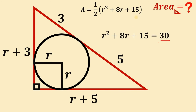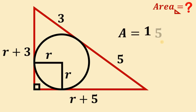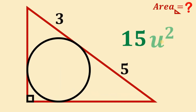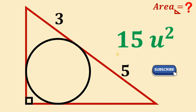Now that we know the value of this expression, we can replace it with 30. So the area of this right triangle equals one-half times 30, and one-half times 30 is simply 15. Therefore, the area of this right triangle equals 15 square units. And as always, we are done.